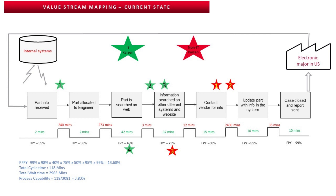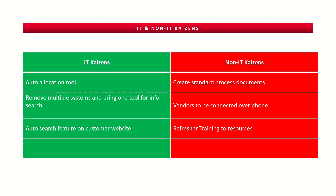The IT kaizens identified were: an auto-allocation tool, removing multiple systems and bringing one tool for information search, and an auto-search feature on the customer website so engineers only press one button and it automatically searches internal tools and external customer websites to fetch information. Non-IT kaizens included creating standard process documents for difficult and unique products, contacting vendors over the phone rather than email to reduce wait time, and providing fresher training to resources so they can identify and update information correctly in the first attempt.